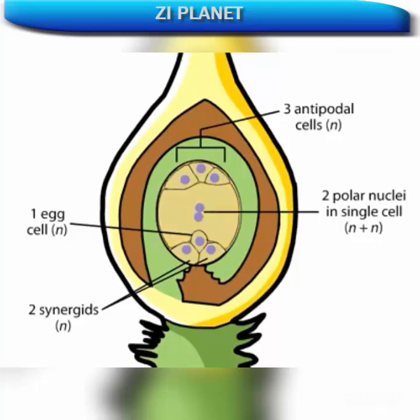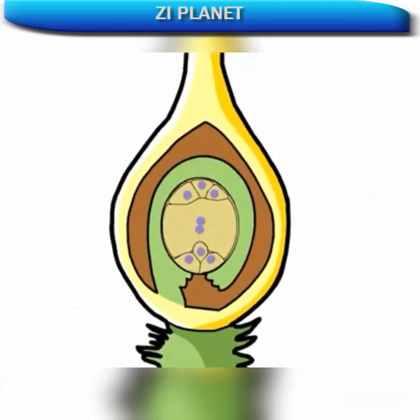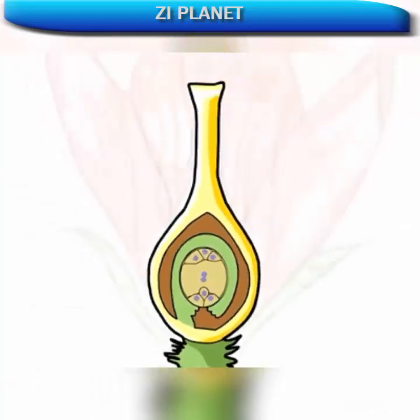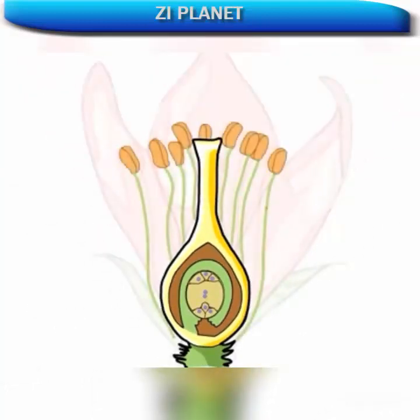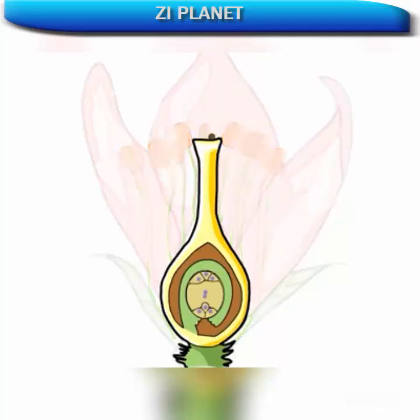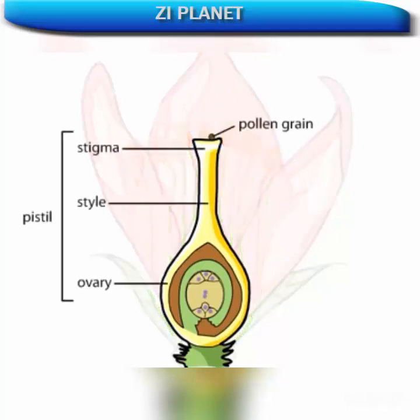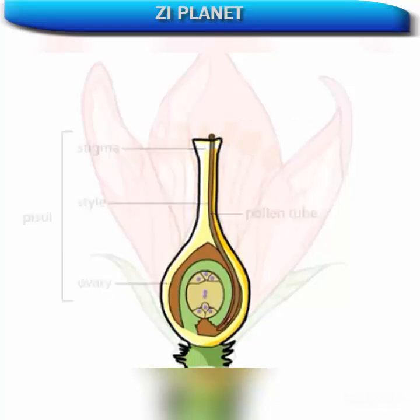Before this can happen, the male gametes, the sperm, must travel to these cells within the female's reproductive organs. To reach the embryo sac, a pollen grain that has landed on the stigma begins to germinate, sending a long pollen tube through the style and ovary.